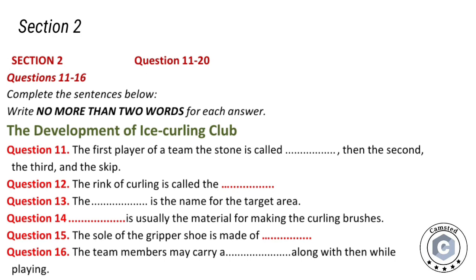Curling shoes are similar to ordinary athletic shoes except that the two shoes in a pair have dissimilar soles. The sole of the slider shoe, designed for the sliding foot, is typically made of Teflon, while the gripper shoe for the hack foot has a special layer of rubber applied to the sole. During the curling game you may also find a stopwatch attached either to the player's clothing or the broom, which is used to time the stones over a fixed distance to calculate their speed.